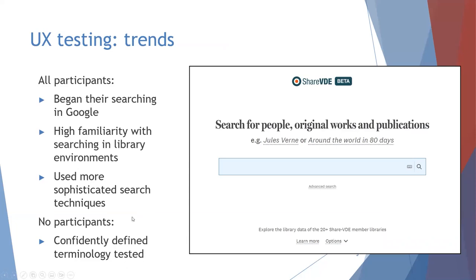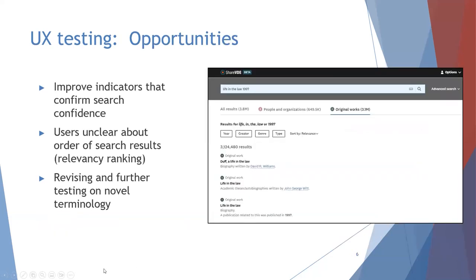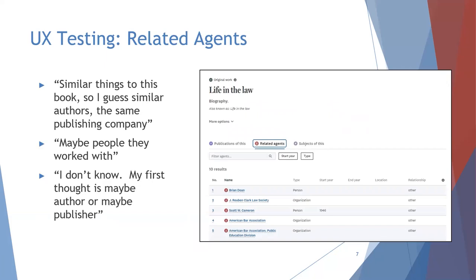What are some of the trends we found? Most users began their searching experience in Google, are highly familiar with library search environments, and used sophisticated search techniques such as Boolean operators or phrase searching with quotes. The other trend was that none of them were able to define the terminology we were testing. Some of the opportunities identified include the need for more indicators to help users feel confident their search results returned what they expected, and clarity around the order of search results — suggesting a need to look more at relevancy ranking in ShareVDE.